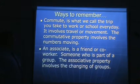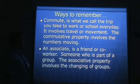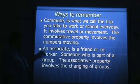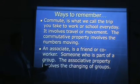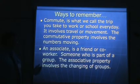Ways to remember which one's which: commute — the word commute is what we call the trip you take to and from work, or as a student, to and from school each day. It involves travel or movement, and the commutative property is all about the numbers moving. Associate — an associate is a friend or co-worker, someone who's part of a group. So the associative property involves grouping.